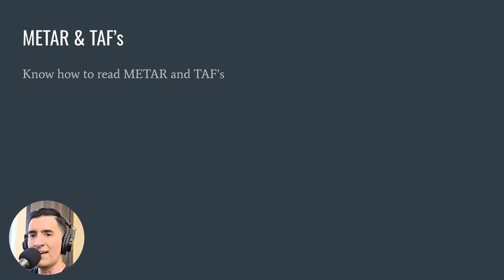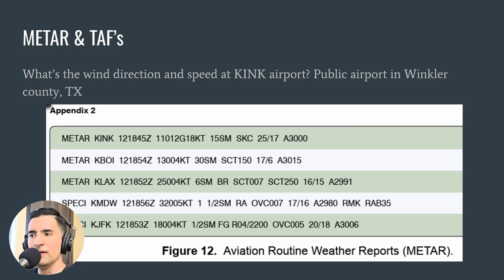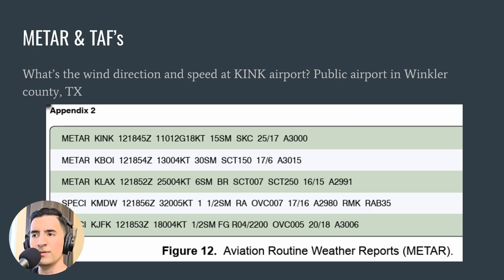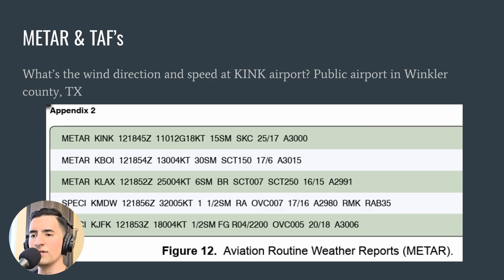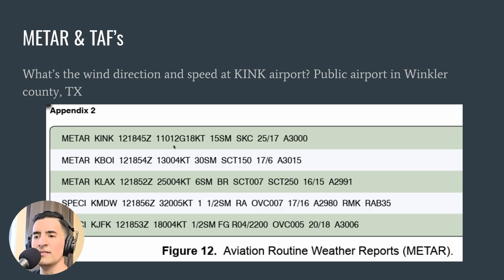Know how to read METARs and TAFs. Know how to find wind direction and speed at a particular airport for a given METAR. The exact question I had: what is the wind direction and speed at this airport? The date/time section shows the 12th day of the month at 1845 Zulu time — that's what the Z stands for. Next comes wind direction and speed: 110 degrees is just past east, so roughly east-southeast. The wind is at 12 knots, and the G means gusting to 18 knots. The answer is: east-southeast wind at 12 knots, gusting to 18 knots.